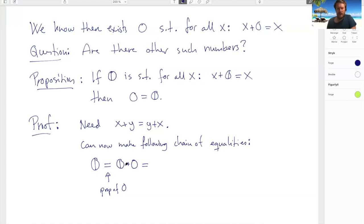So then I use this commutativity. Here I use commutativity to flip these two guys around, and now I can write that this equals just zero. So here I'm using the property of fat zero, saying that x plus fat zero equals x. And here I used commutativity.